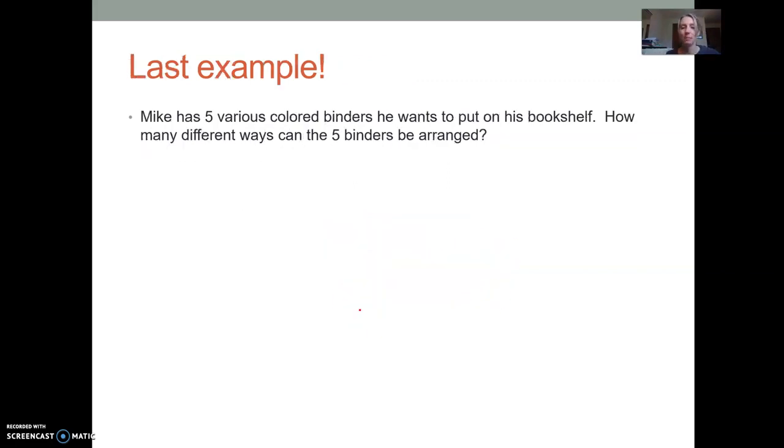Okay, and in our last example, where we don't have three, we have five. So Mike has five various colored binders he wants to put on his bookshelf. How many different ways can the five binders be arranged? And when I do this with my students, what I find is that they get confused by the way that I say this. So we're just going to say there's a bookshelf. And you should know that I'm a really good artist. So you should be intimidated by this. There's my bookshelf. He's got room in his bookshelf to put these five binders, we're going to say just vertically. So one binder is going to go here, one's going to go here, next to it, next to it, and next to it. And then there's going to be a bookend here so that they don't all fall down.